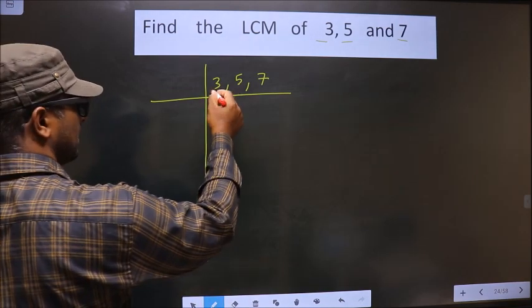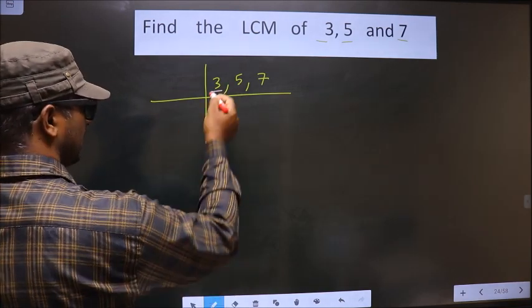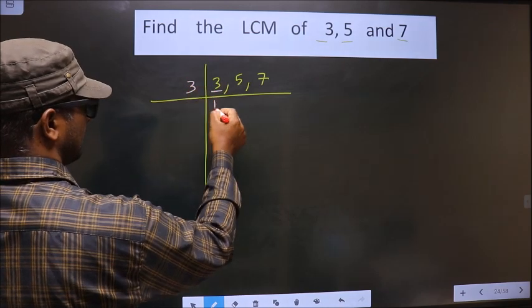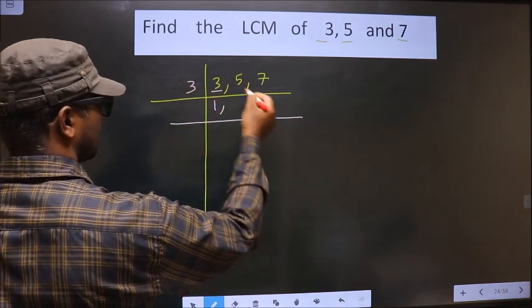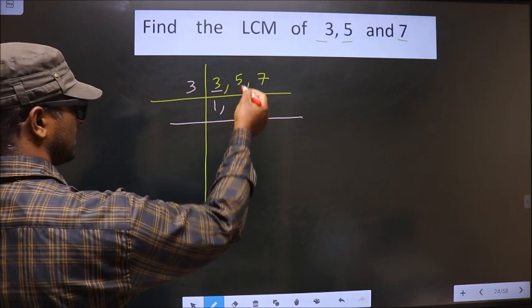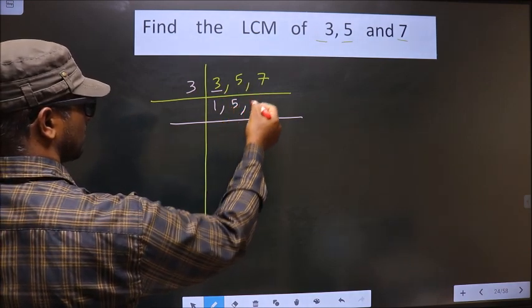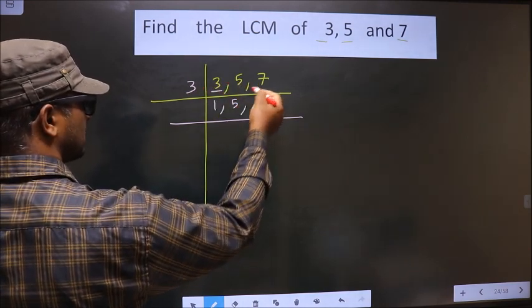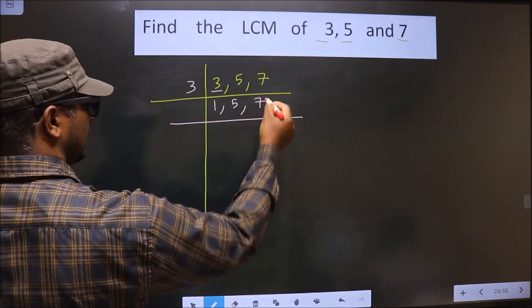The first number here you have is 3. 3 is a prime number, so we take 3 once 3. 5 is not divisible by 3, so as it is you write it down. 7 also not divisible by 3, so as it is you write it down.